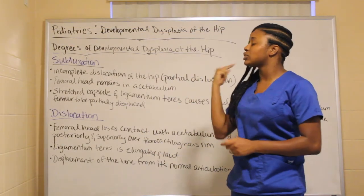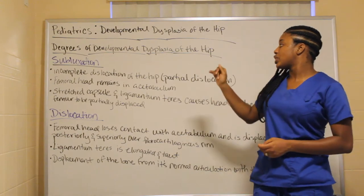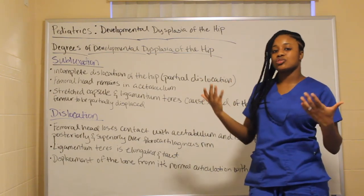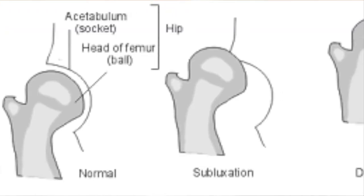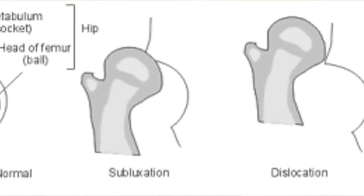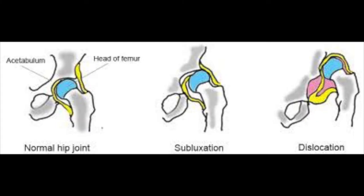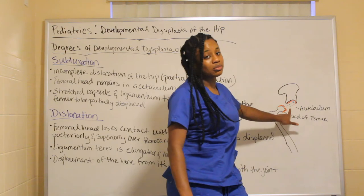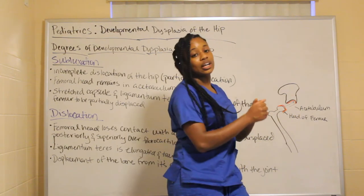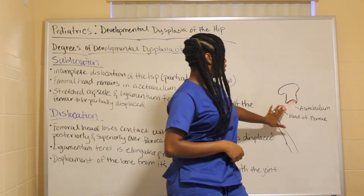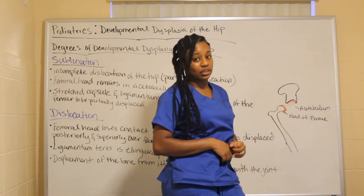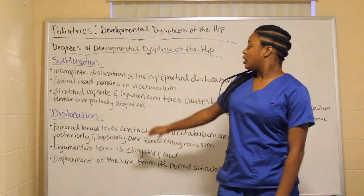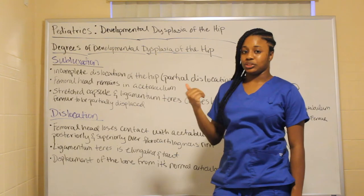The second degree is subluxation, which consists of an incomplete dislocation of the hip — a partial dislocation. The femoral head remains in the acetabulum, but the stretched capsule and ligamentum teres causes the head of the femur to be partially displaced. The ligamentum teres is stretched or elongated, which causes the femoral head to not sit properly into the hip socket.